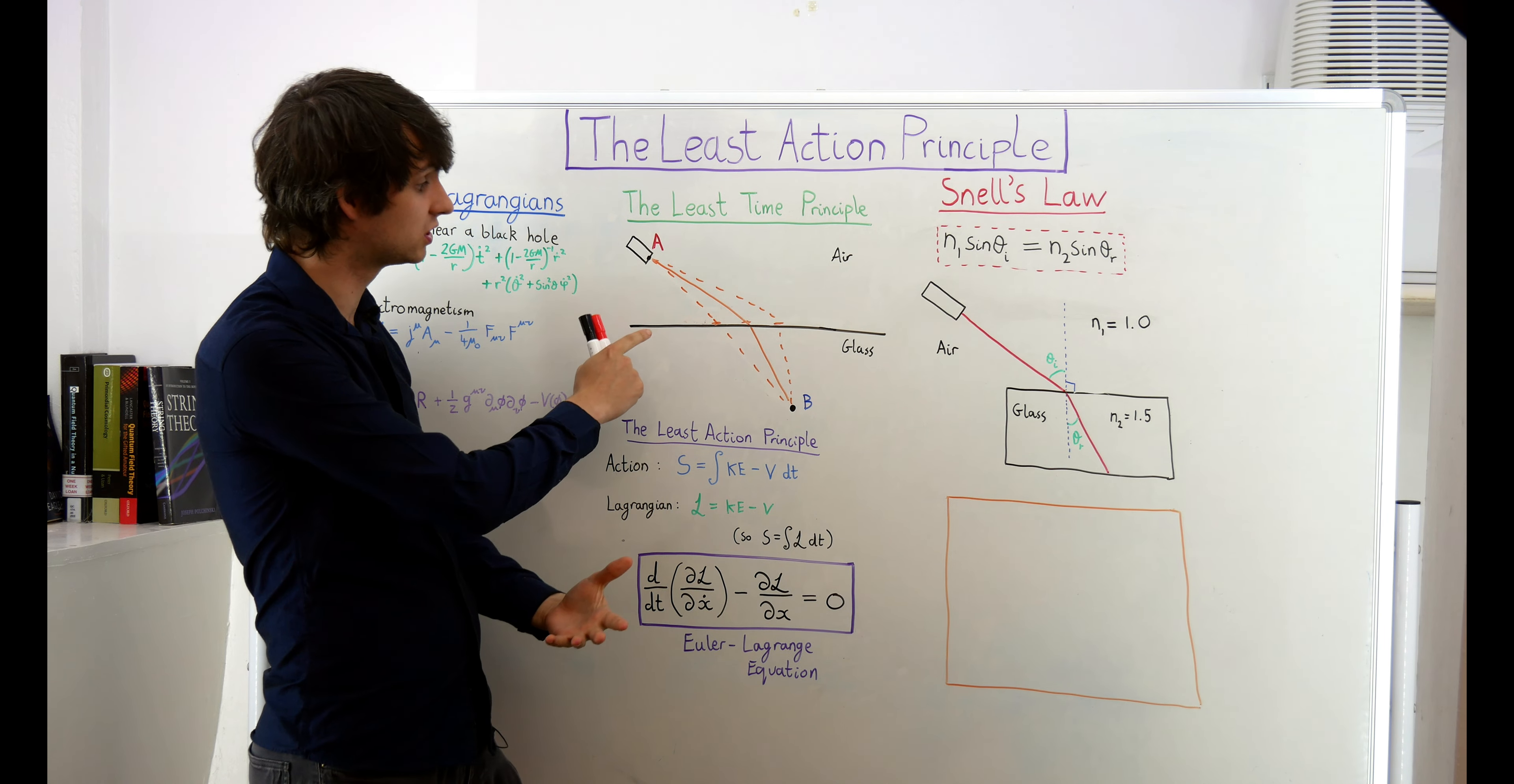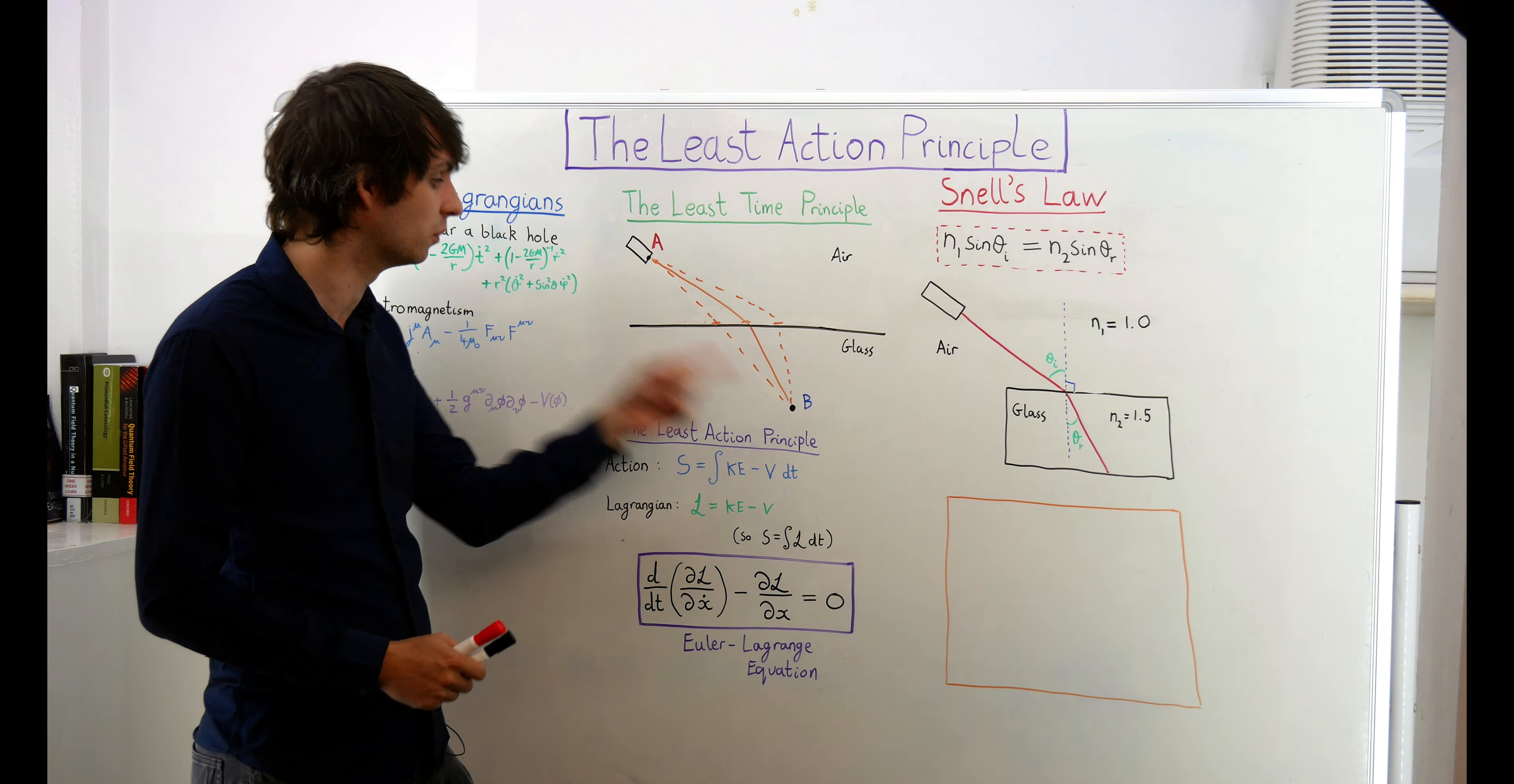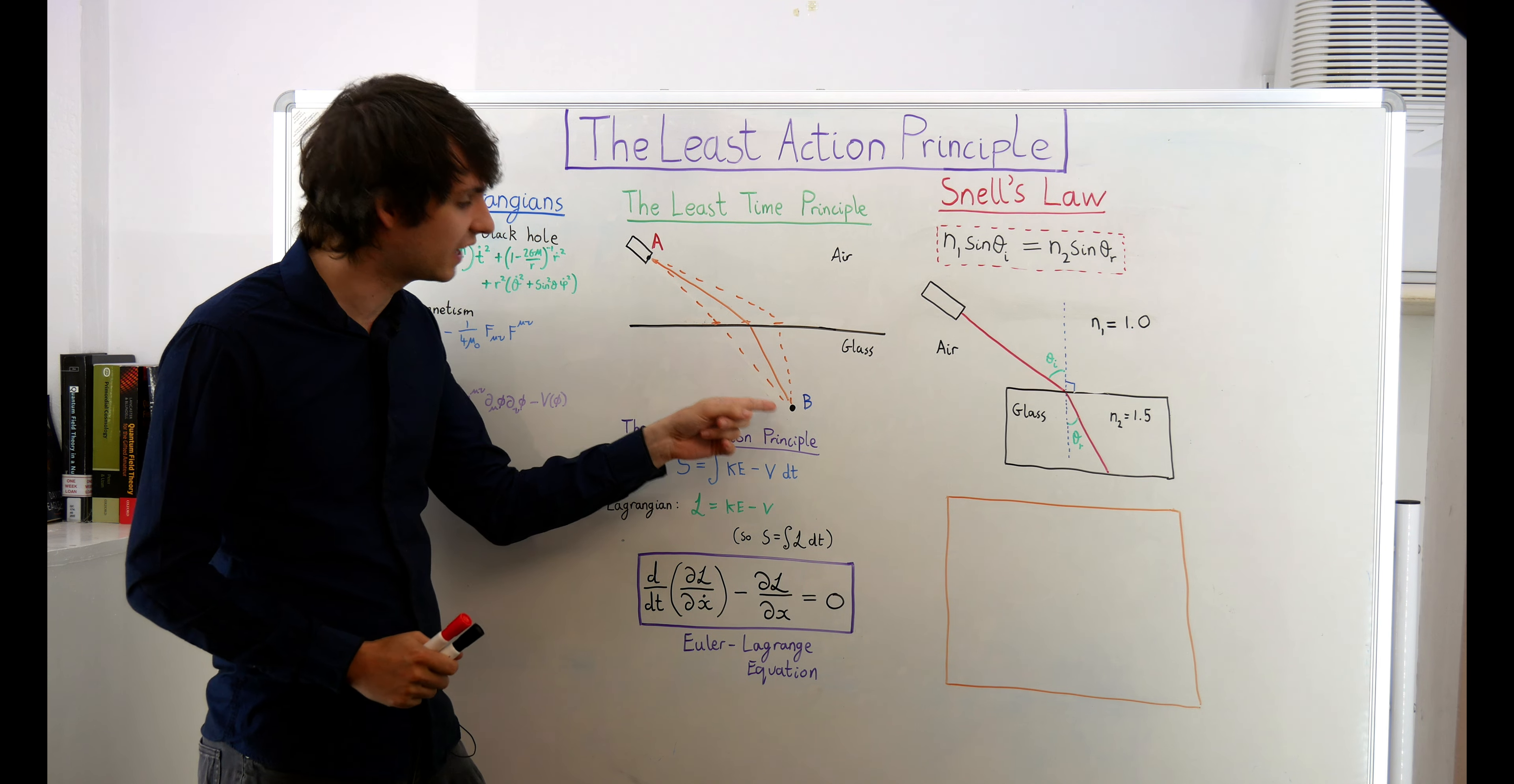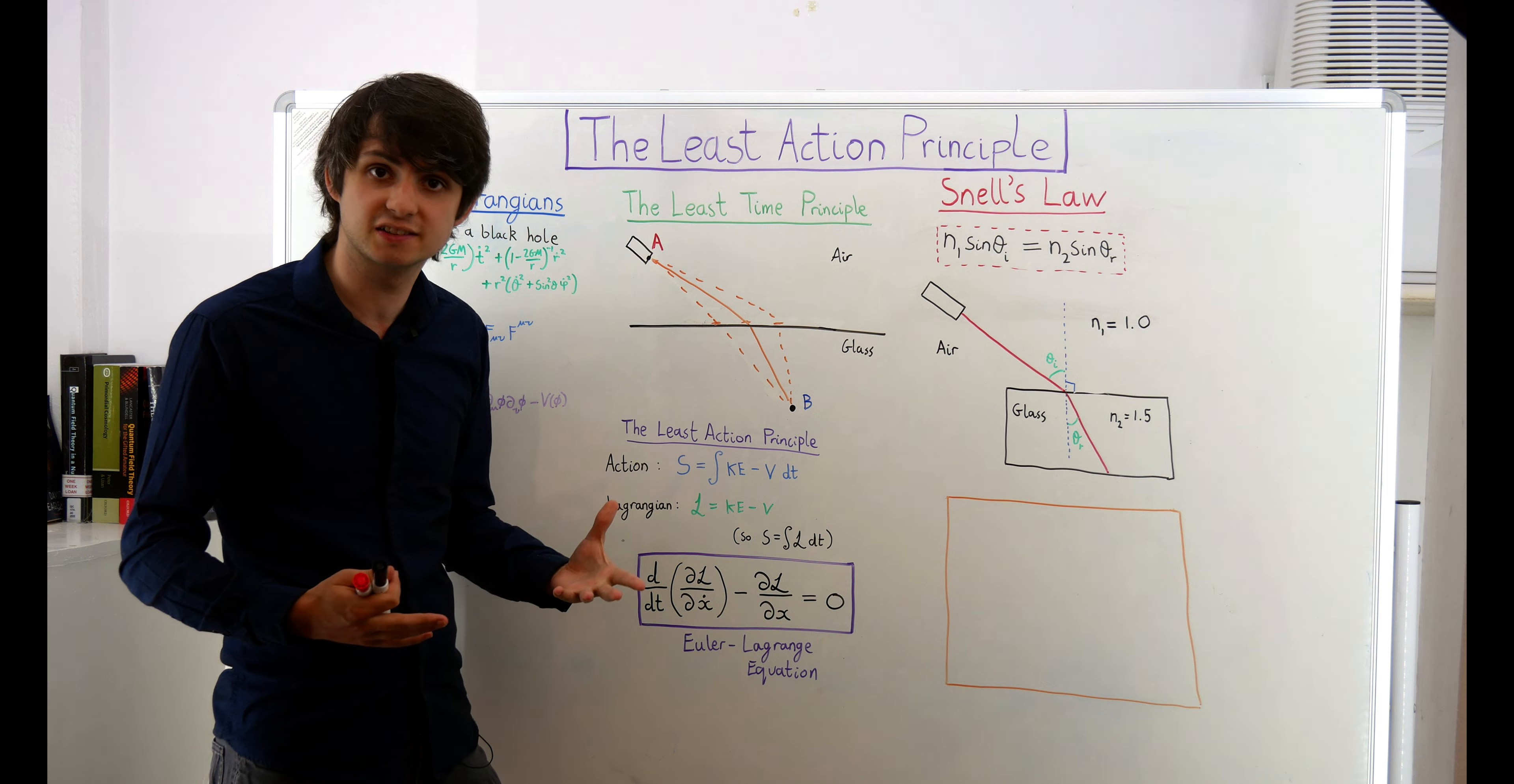Now, you may have noticed something quite strange about the least time principle. There seems to be some suggestion here that the light ray already knows where it's going to end up before it gets there. After all, in order to work out the quickest path between A and B, you need to know where B is first. So how can light travel along the quickest path before it's actually ended up at the end point B? Does light know already where it's going to end up before it gets there?